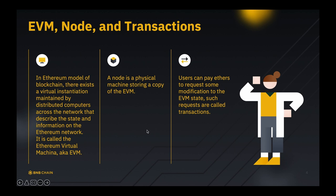Transactions here are more than just moving money as it means in economy. In order to propose a modification to the EVM state — like telling people a number or some information changes — you need to request a modification through a node to broadcast to the system. These requests are called transactions. In order to request these modifications, users need to pay ethers or any native assets in the blockchain system they are using. After paying, they will need to wait for the network to confirm and validate the transaction, and then that modification becomes forked into the chain.